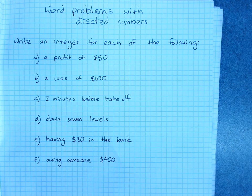Word problems with directed numbers. Write an integer, that is a whole number with positive or negative, for each of the following.